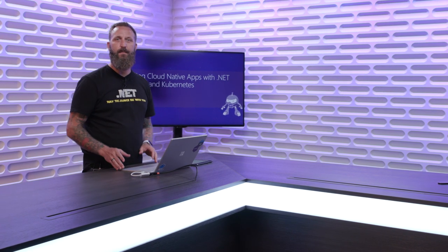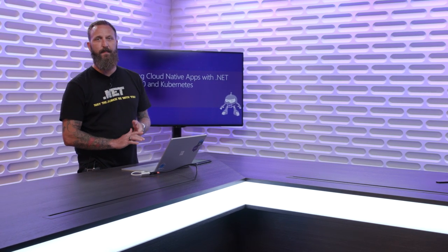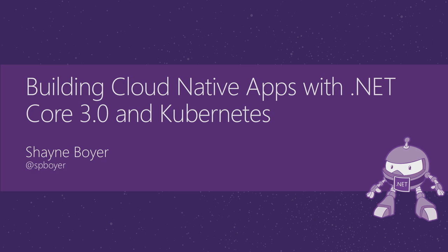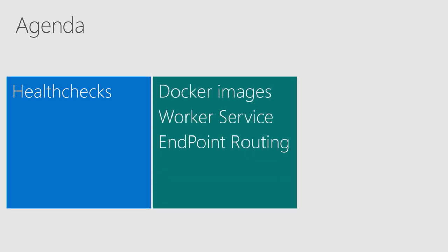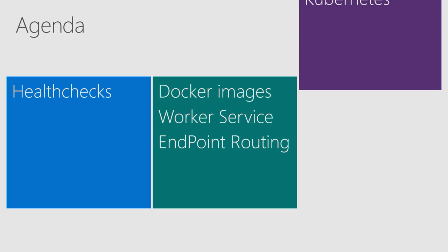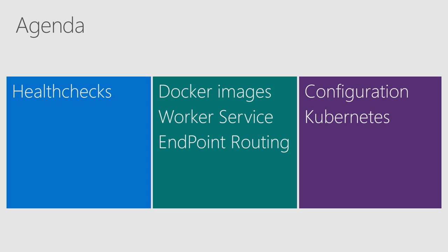My name is Shane Boyer and I am a PM on the Cloud Advocate team. Today we're going to be talking about building cloud-native apps with .NET Core 3.0 and Kubernetes. We'll cover health checks, changes to Docker images, the new worker service template, endpoint routing, Kubernetes integration, and the configuration system built into ASP.NET Core.